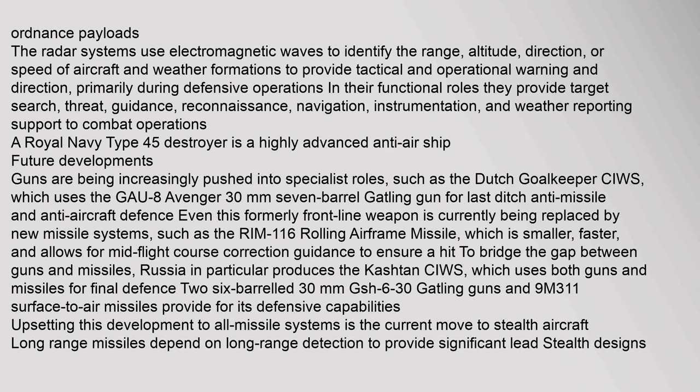Guns are being increasingly pushed into specialist roles, such as the Dutch Goalkeeper CIWS, which uses the GAU-8 Avenger 30mm cannon. Stealth technology has cut detection ranges so much that aircraft are often never even seen, making intercept difficult. Systems for detection and tracking of stealthy aircraft are a major challenge for anti-aircraft development. As stealth technology grows, so does anti-stealth technology: multiple-transmitter radars such as bistatic radars and low-frequency radars are said to have capabilities to detect stealth aircraft. Advanced thermographic cameras incorporating QWIPs would be able to optically detect a stealth aircraft regardless of RCS. The newest SAMs, most notably the S-400, are claimed to be able to detect a target with a 0.05m² RCS from 90km.